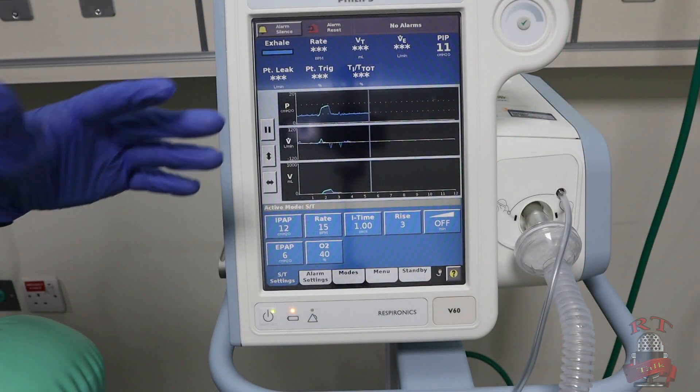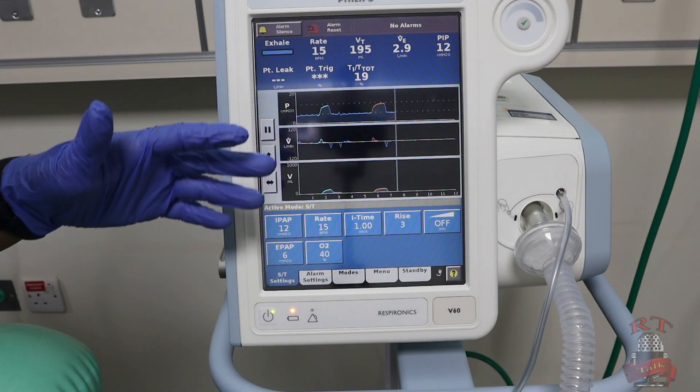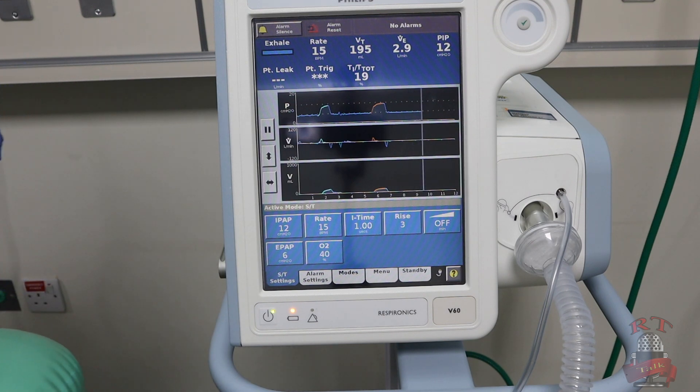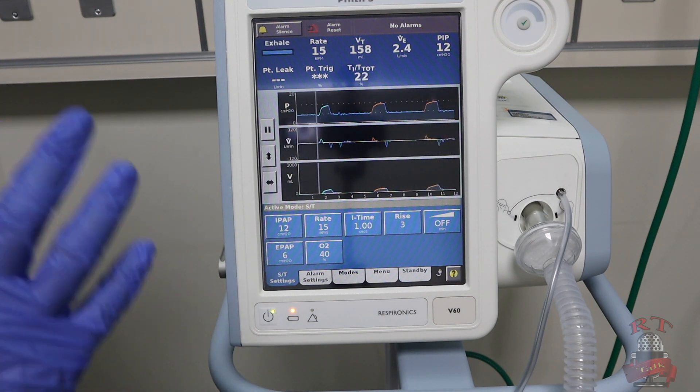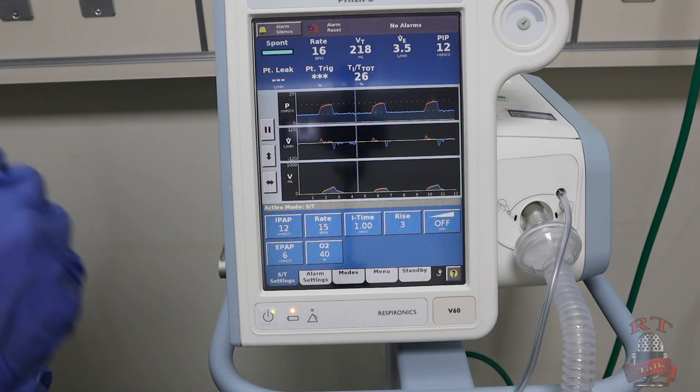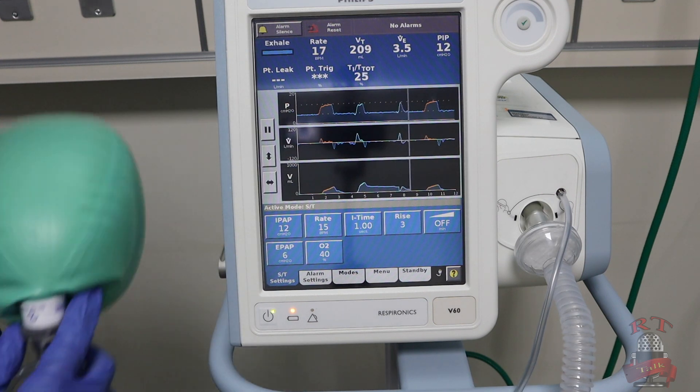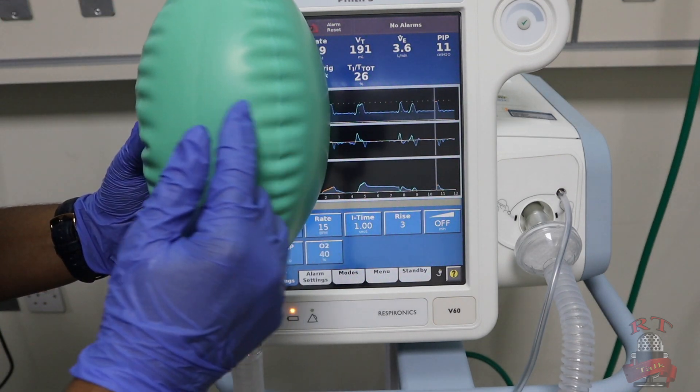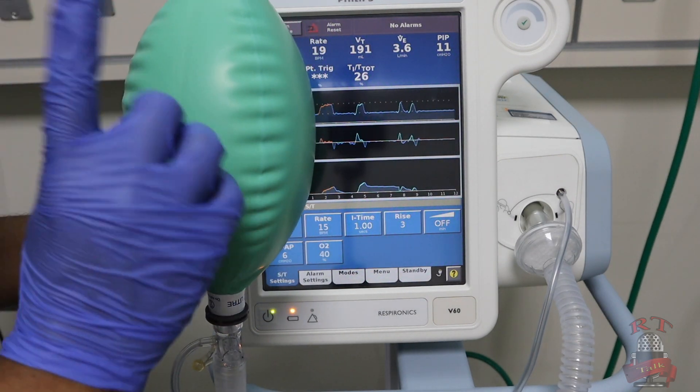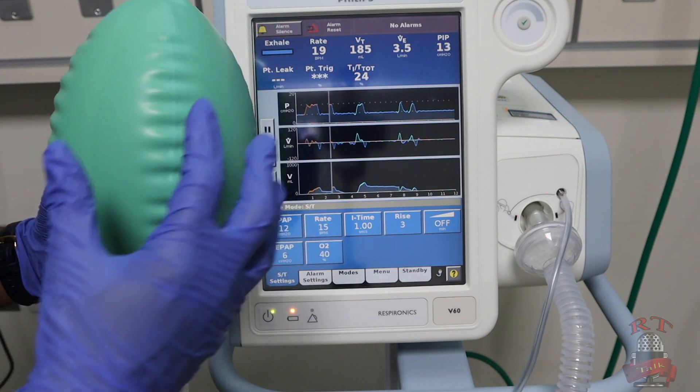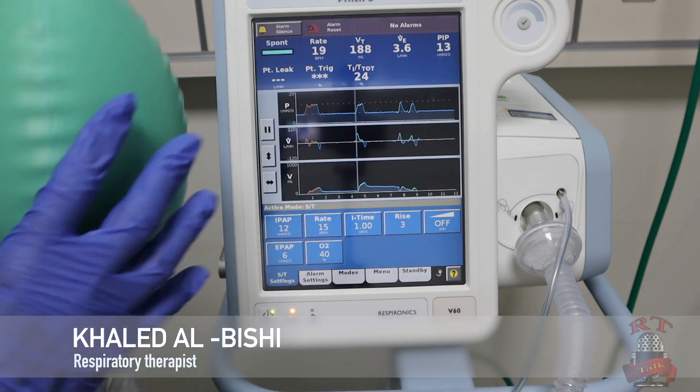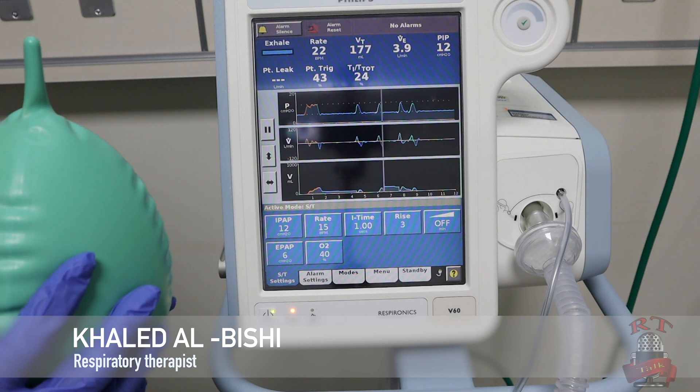So this is how we set up CPAP, BiPAP, our alarms, and our settings. Before we close this video, regarding troubleshooting—the most common problem with the BiPAP is the leak. So you will make sure that around the face of your patient there is no leak, and it's not very tight so you will not cause harm to your patient. Now you are ready to work with CPAP and BiPAP. Thank you so much.